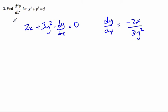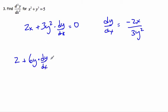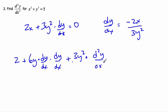To find the second derivative, we take the derivative again. The derivative of 2x is just 2. Then for the 3y squared term, we have to use the product rule: 6y times dy/dx times dy/dx, plus 3y squared times the second derivative, equals 0. Note that the second derivative and the derivative squared are not the same thing.